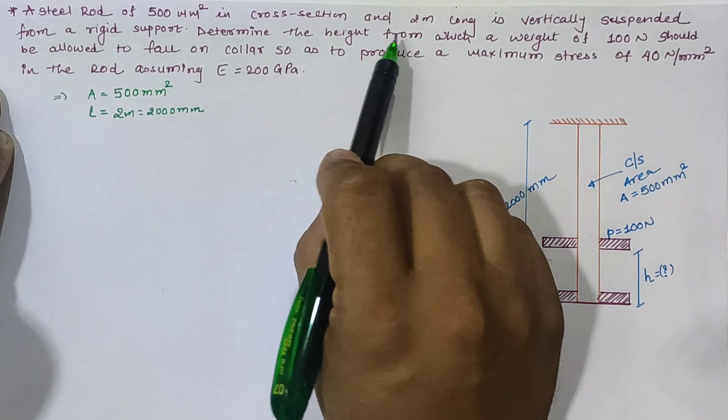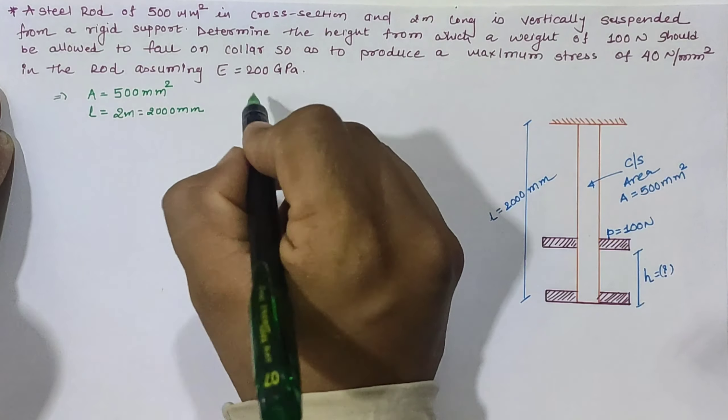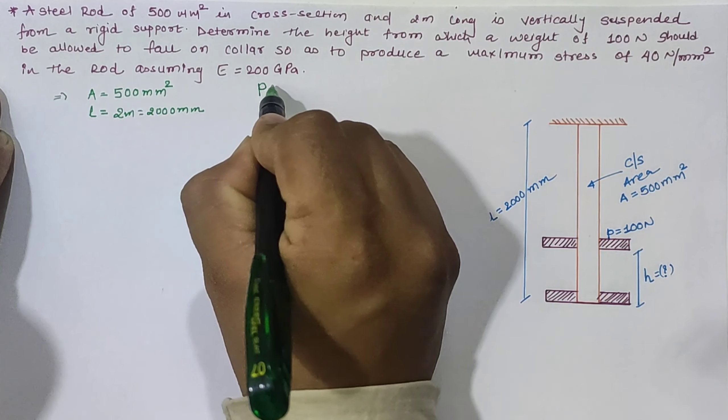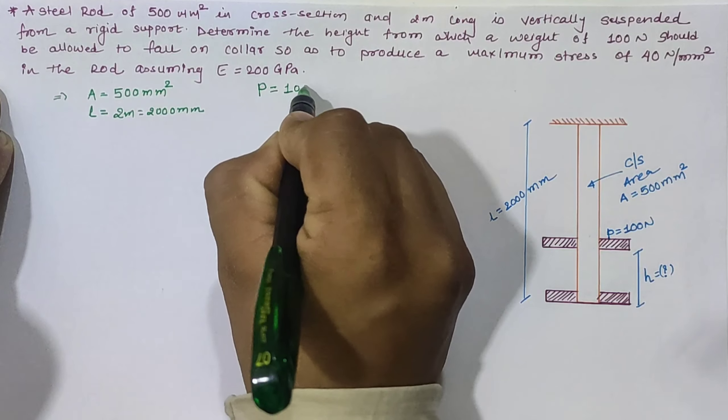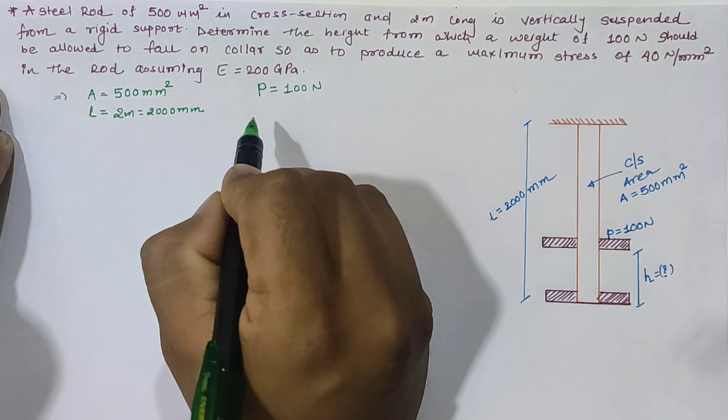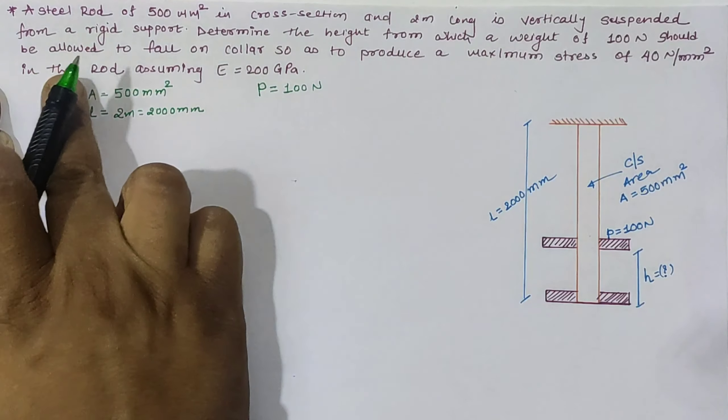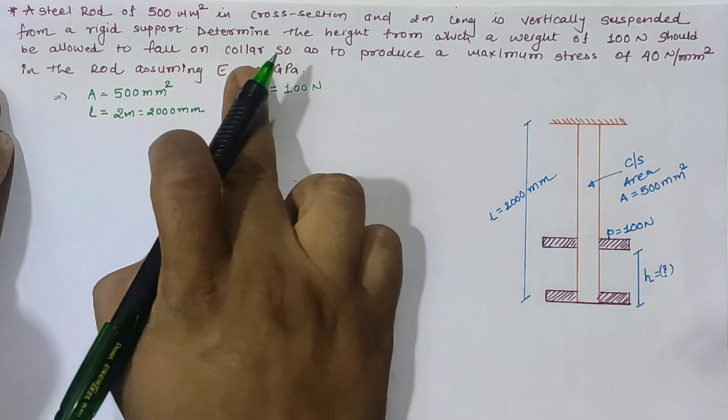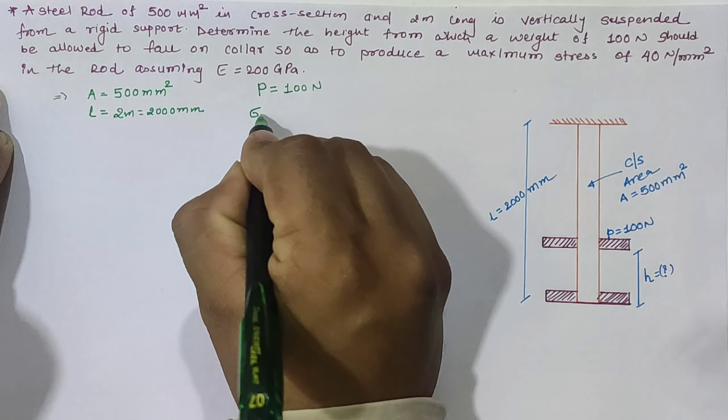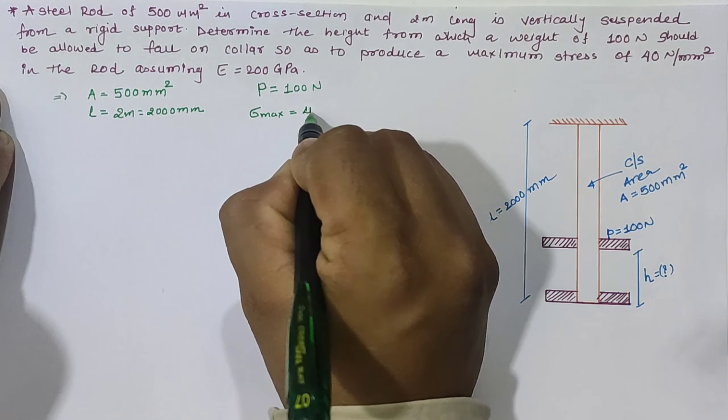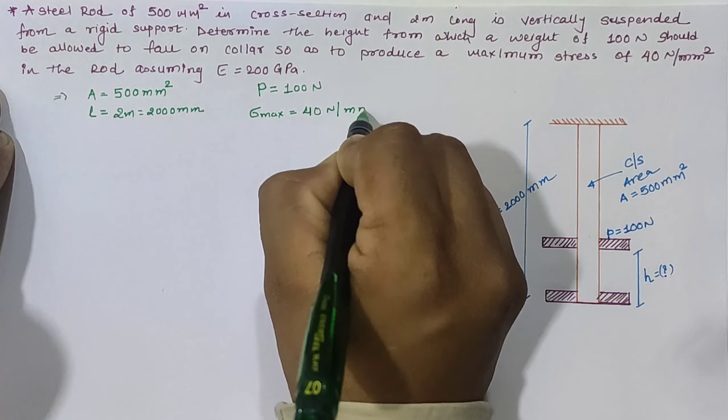Next, we need to determine the height from which a weight of 100 Newton (P = 100N) should be allowed to fall on the collar so as to produce a maximum stress of 40 N/mm² (sigma max = 40 N/mm²).